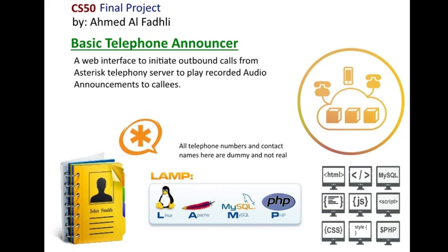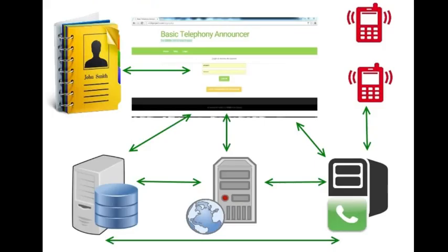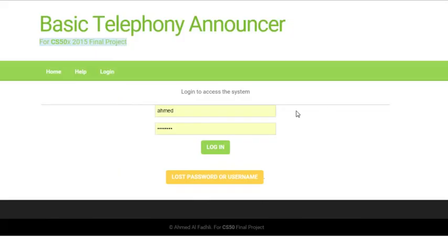Asterisk is used to dial the contacts from the address book. A web interface is used as the front-end, and Asterisk telephony, MySQL database, and send-mail servers are used as back-end. The two telephones here are used to receive the calls from Asterisk. This is the web interface after login.